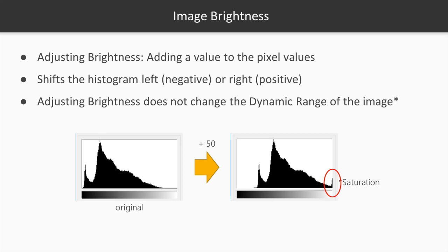Brightness is an additive operation, so image brightness is adjusted by adding or subtracting values from the image pixel values. One common way to visualize the statistics of an image is to look at its histogram. The histogram shows the distribution of pixels within the image — it's a bar chart where the x-axis is the grayscale pixel values and the y-axis is the count of pixels with that particular value.